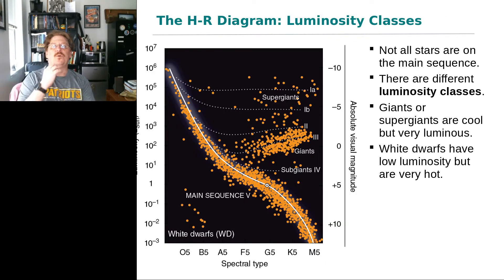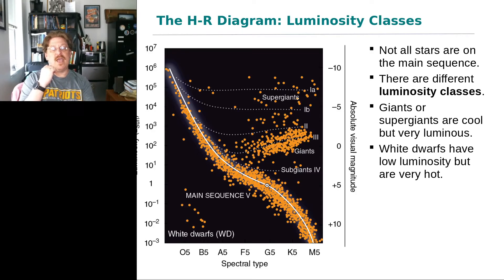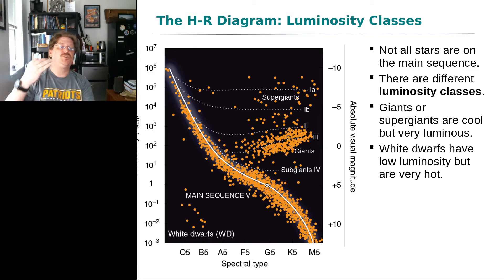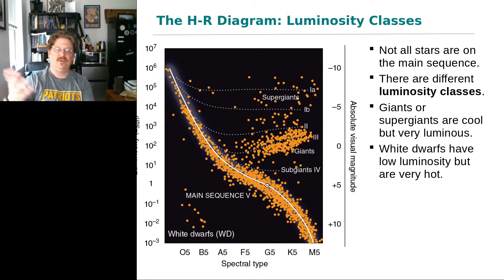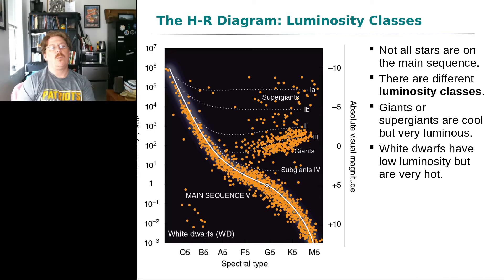Beyond the basic spectral type, we have the MK classification system, which incorporates both spectral type — like O5, G2, M5 — and the luminosity of the star.